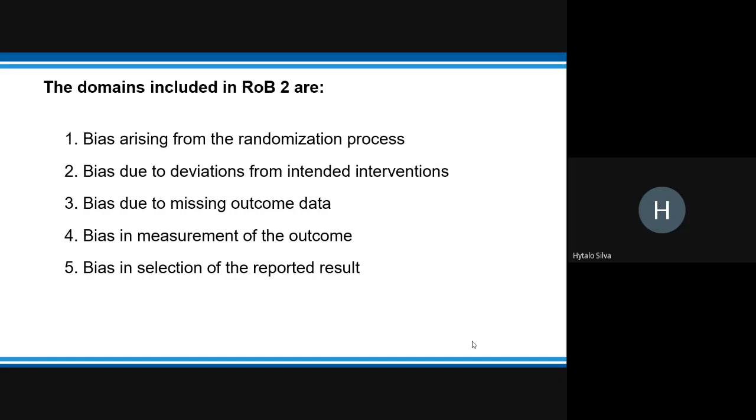The domains included in ROP2 are: bias arising from the randomization process, bias due to deviation from intended intervention, bias due to missing outcome data, bias in measurement of the outcomes, and bias in selection of the reported results.